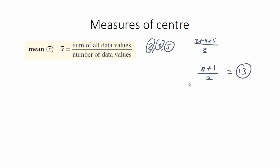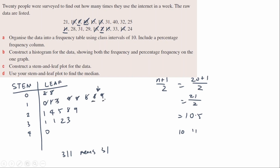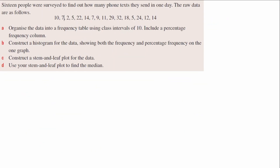The stem and leaf plot already orders data from smallest to largest. With 20 data points, the median position is (20 + 1) ÷ 2 = 10.5, meaning the median lies between the 10th and 11th values. Counting through, the 10th value is 18 and the 11th is 19, so the median is (18 + 19) ÷ 2 = 18.5.